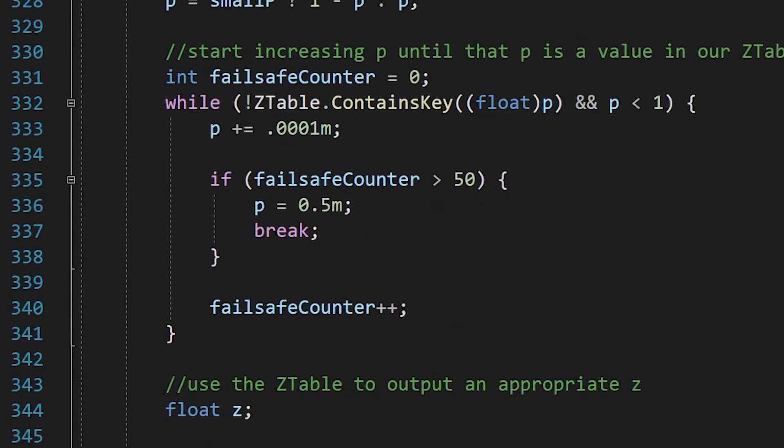After that, we start looping through our table. We first check to see if our original p is a key. And if it's not, we add 0.0001 to it and try again. The most spread out the p-values are is 0.004. So if the loop runs more than 50 times, something's wrong. And we need to break out of the loop to avoid an infinite loop crashing our game.